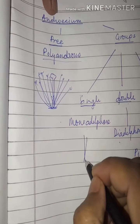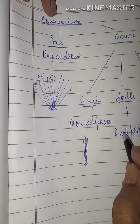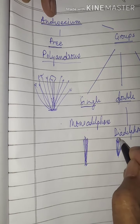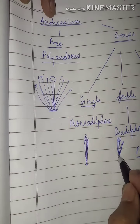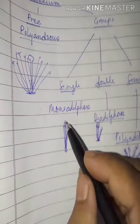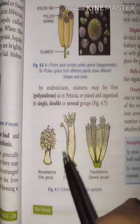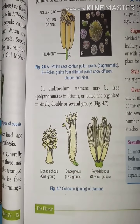See the figures: one is organized in a single group — that is monadelphous; one is organized in two groups — that is diadelphous; and one is organized in several groups — that is polyadelphous.